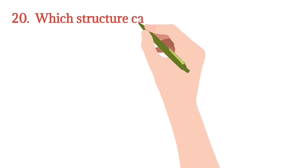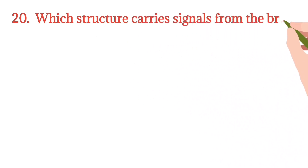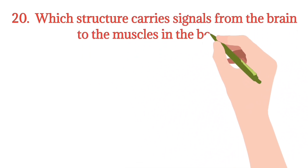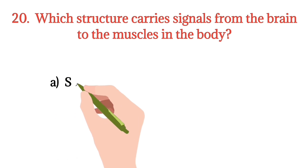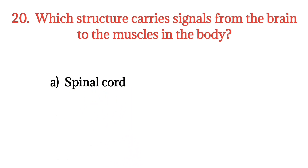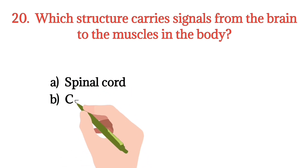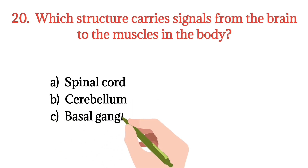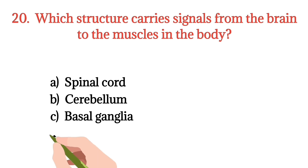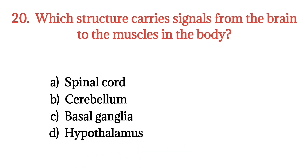MCQ number 20. Which structure carries signals from the brain to the muscles in the human body? Option A: Spinal cord. Option B: Cerebellum. Option C: Basal ganglia. Option D: Hypothalamus. The right option is Option A.